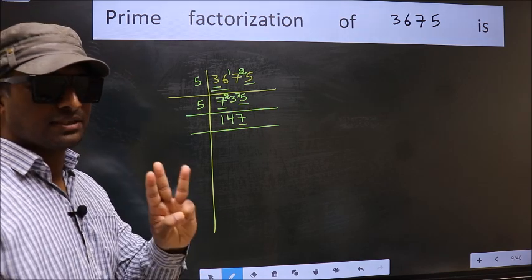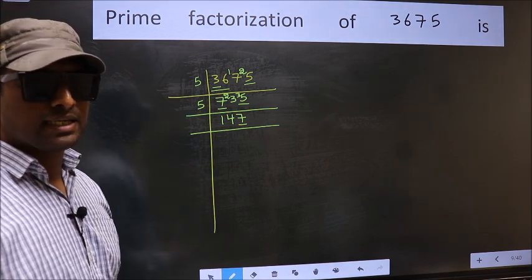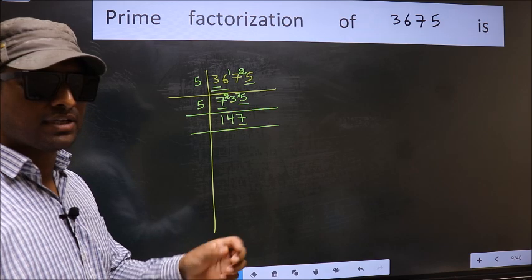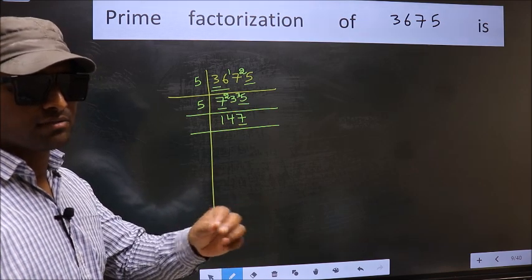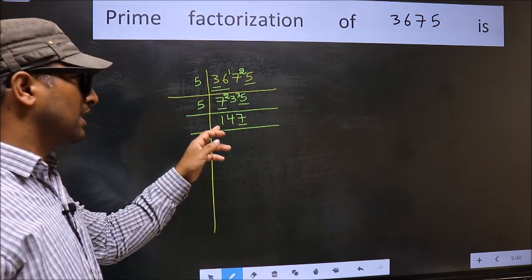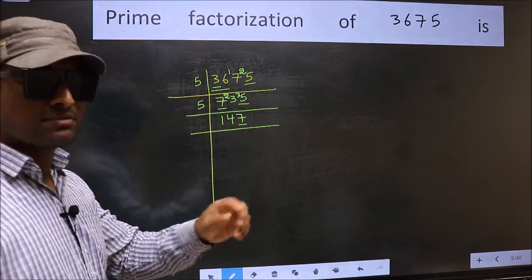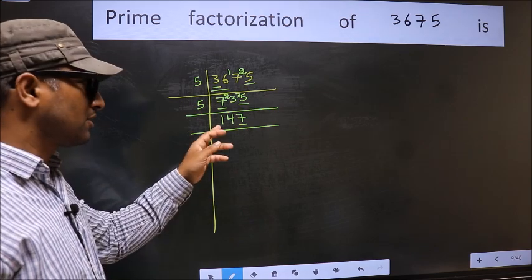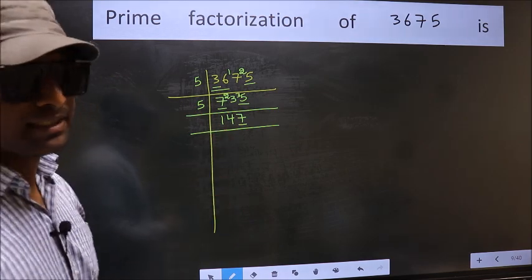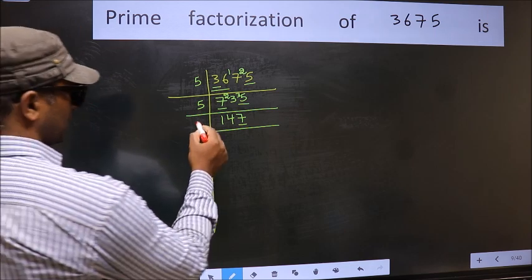Next prime number 3. To check divisibility by 3, we should add the digits. What I mean is 1 plus 4 plus 7, we get 12, and 12 is divisible by 3. So this number also divisible by 3. So take 3 here.